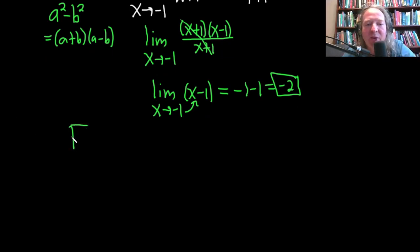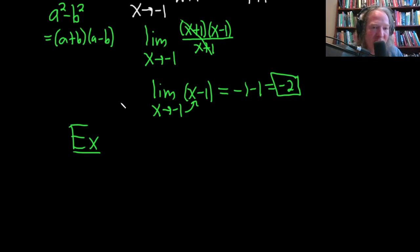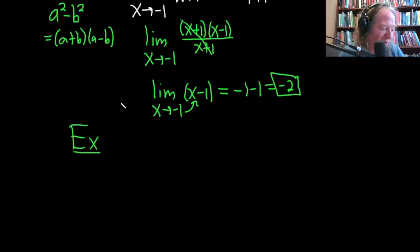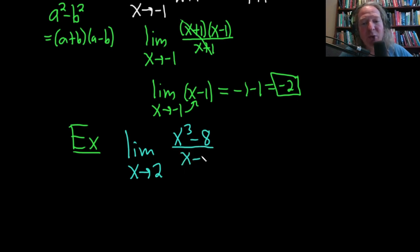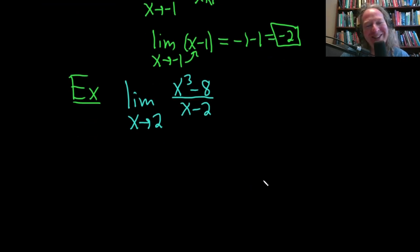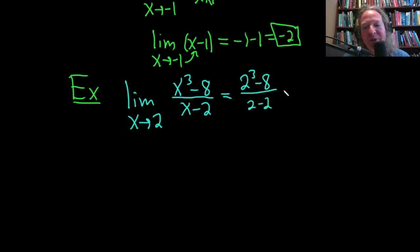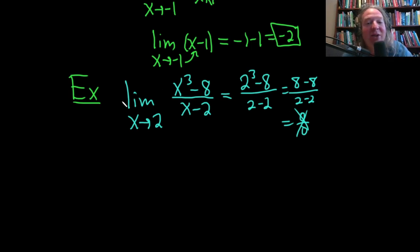Let's take the limit as x approaches 2 of (x³ - 8) over (x - 2). Plugging in 2 gives 2³ - 8 over 2 - 2, which is 8 - 8 over 0, giving 0/0. The world doesn't end, but it doesn't work — so we have to do something else. That something else is, of course, factoring — and we have the difference of cubes formula.